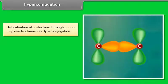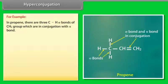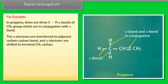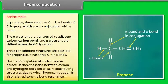Hyperconjugation is the delocalization of sigma electrons through sigma–pi or sigma–p orbital overlap. The sigma bond in conjugation with a pi bond or p orbital participates in delocalization and stabilizes the system. For example, in propene, the three C–H sigma bonds of the CH₃ group are in conjugation with the pi bond; the sigma electrons are transferred to the adjacent C–C bond and pi electrons shift to the terminal CH₂ carbon. Because the C–H bond does not appear in contributing structures, hyperconjugation is also called 'no-bond resonance.'